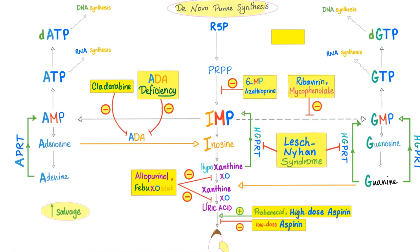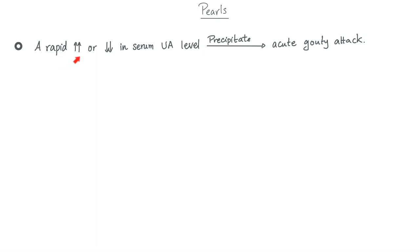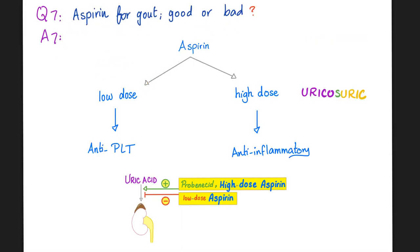Is aspirin good or bad for gout? Remember that a rapid increase or decrease in serum uric acid levels can precipitate acute attacks. It depends on the dose. Low-dose aspirin is anti-platelet and is actually bad for gout — it inhibits uric acid excretion. High-dose aspirin is anti-inflammatory, and since gout is an inflammatory arthritis, high-dose aspirin can be beneficial because it is uricosuric at high doses.